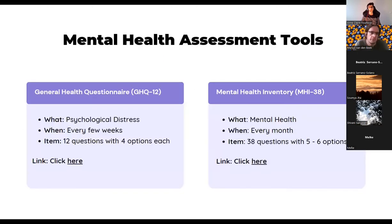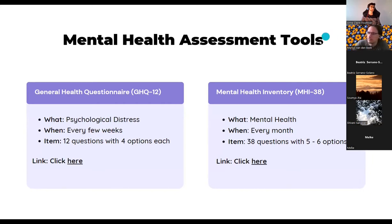The third outcome is the mental health assessment tools. We have two tools the community can use. One is the General Health Questionnaire, which measures psychological distress, can be used every few weeks, and consists of 12 questions with four options each. The other is the Mental Health Inventory, which has 30 questions in total with options ranging from five to six choices and can be used every month.